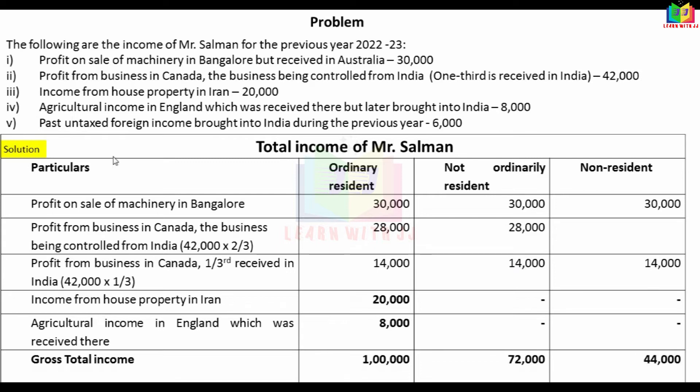To summarize the classification: received in India is one category; controlled from India is another. These are the two parts we treat as Indian income or deemed Indian income for the purpose of this problem.